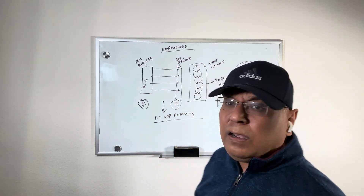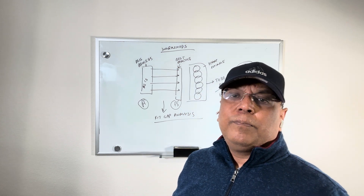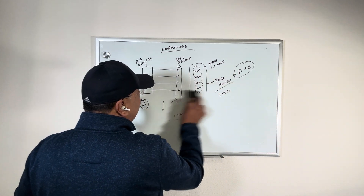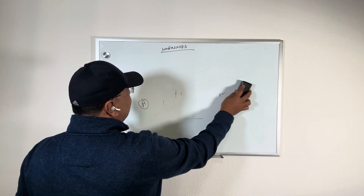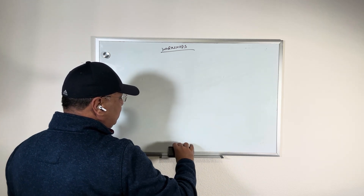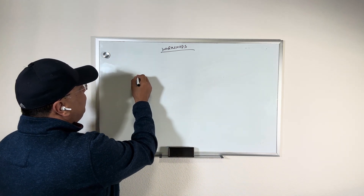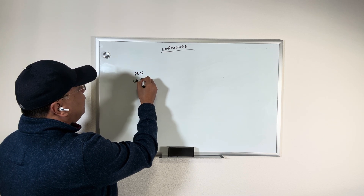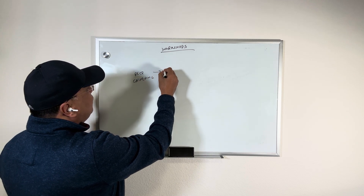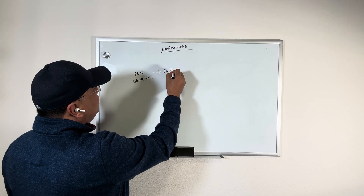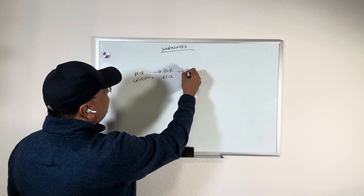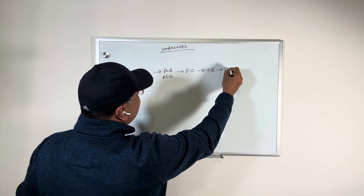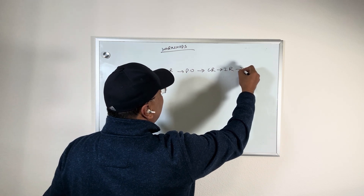Let's quickly look at an example using a procurement process. You have requirement gathering, then a purchase requisition, then a purchase order, then a goods receipt, then an invoice receipt, and then payment.